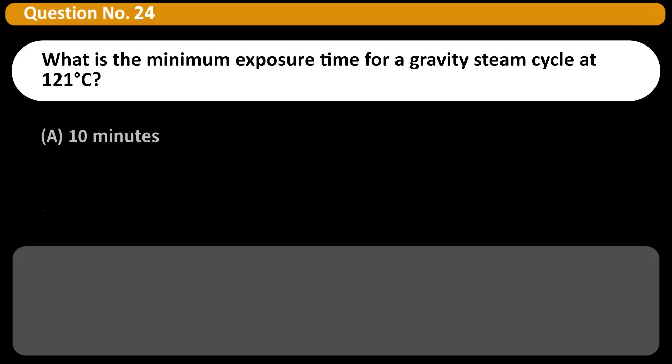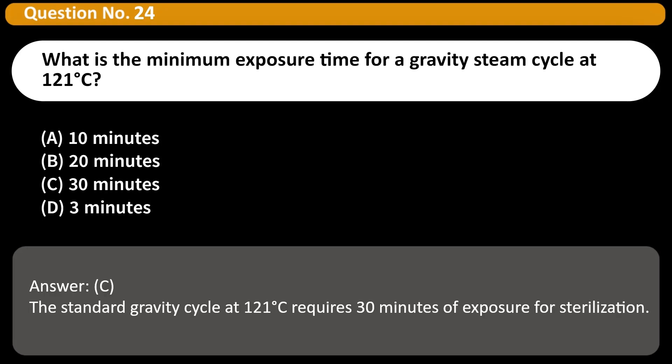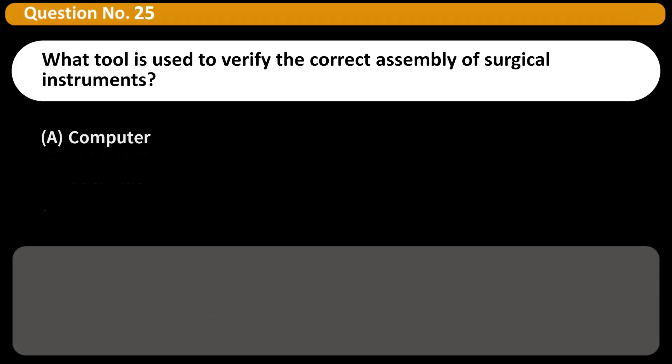What is the minimum exposure time for a gravity steam cycle at 121 degrees Celsius? A. 10 minutes, B. 20 minutes, C. 30 minutes, D. 3 minutes. Answer C. The standard gravity cycle at 121 degrees Celsius requires 30 minutes of exposure for sterilization.